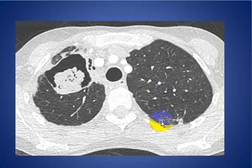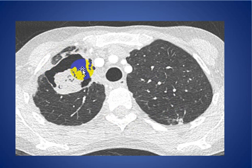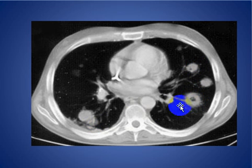Here we see a cavitary region with a soft tissue mass density within it, consistent with aspergilloma. This demonstrates the Monod sign. Here, multiple nodules with cavitation are surrounded by a halo — this is invasive aspergilloma.